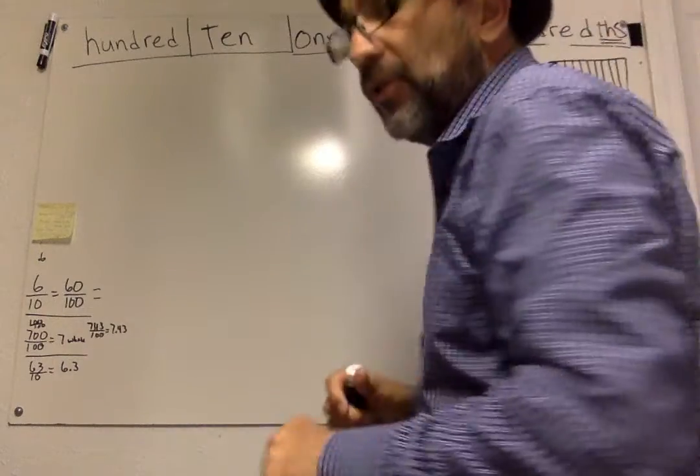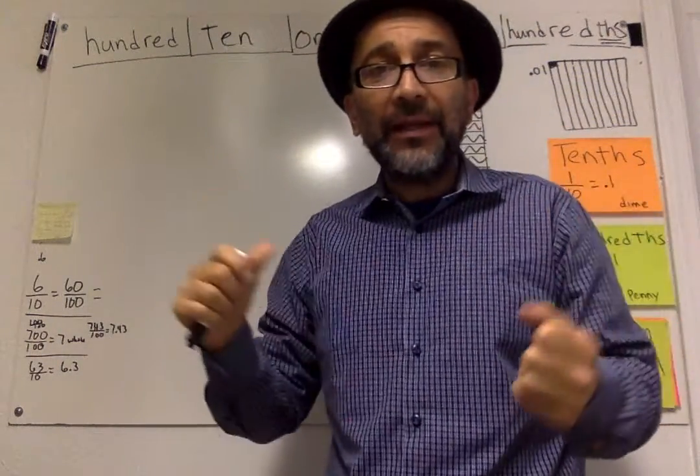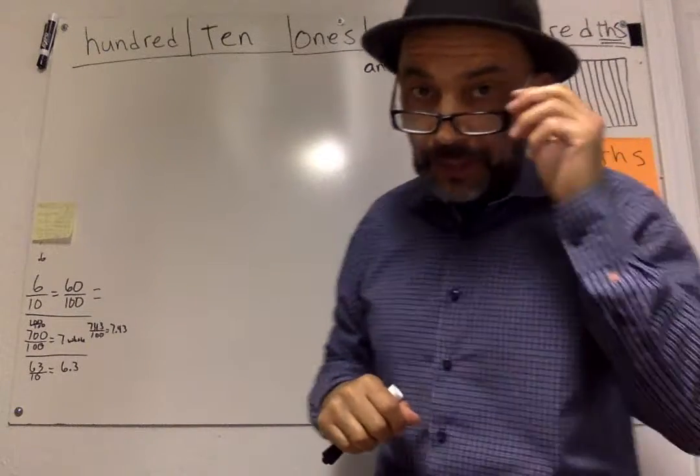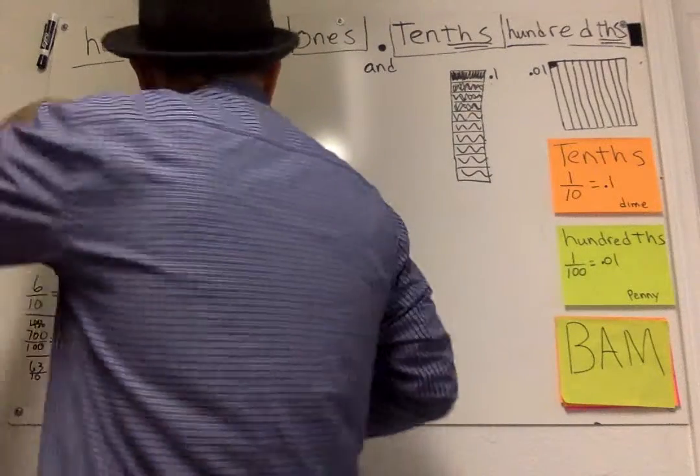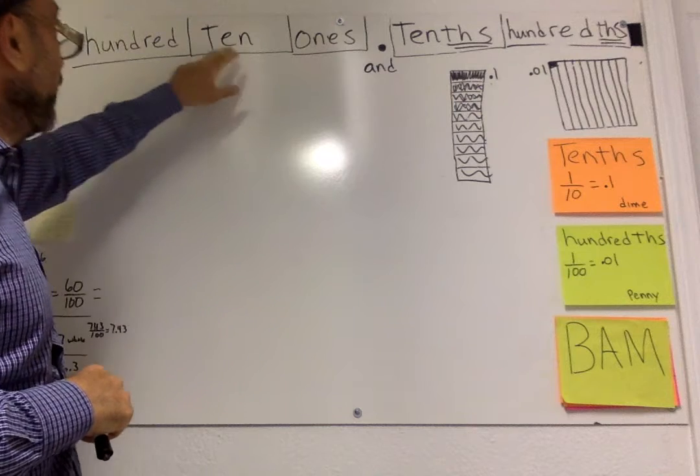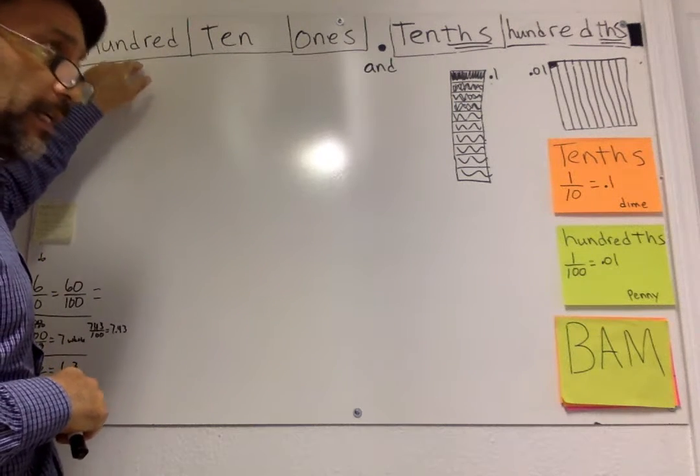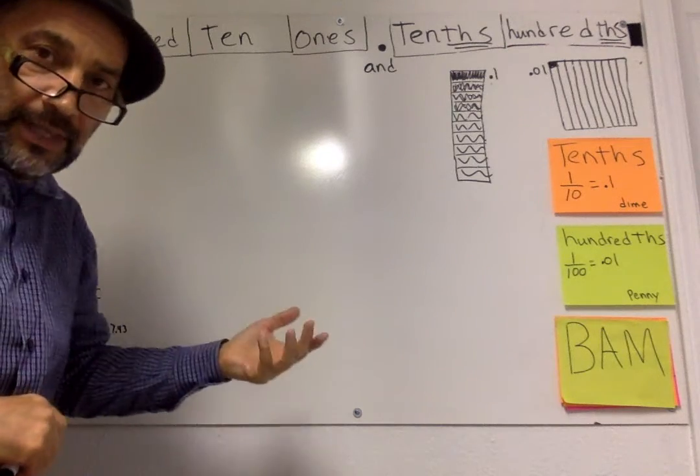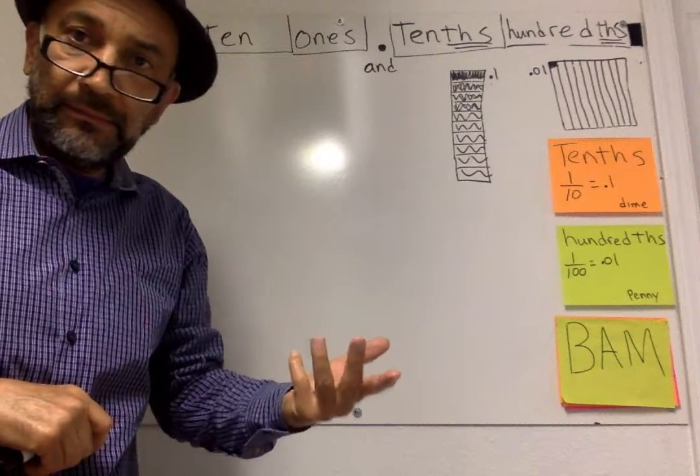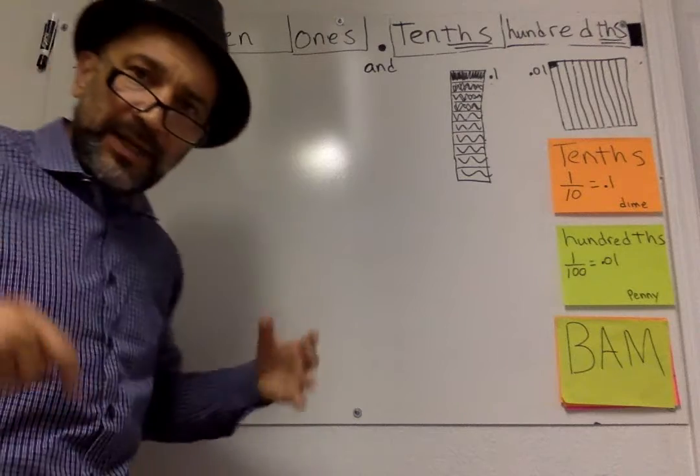Now, what you have to know is all we're doing is we're going down the place value. In the beginning, we did place value, and it was very important. When you have ones, and then what's bigger than ones? Tens. And then hundreds, thousand, ten thousand, hundred thousand, a million, ten million, hundred million, and so on. So you get bigger and bigger.